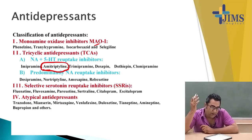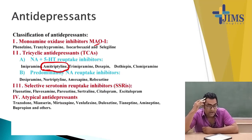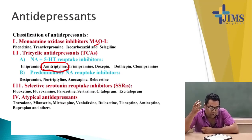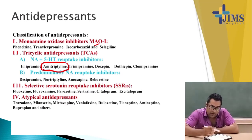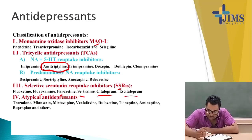Other TCA antidepressants are nortriptyline, imipramine which is widely used in nocturnal enuresis, trimipramine, doxepin, dothiepin, and clomipramine. SSRIs are the most commonly used antidepressants right now; they include escitalopram, citalopram, sertraline, paroxetine, fluvoxamine, and fluoxetine.